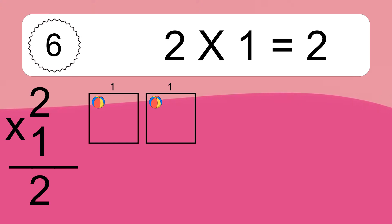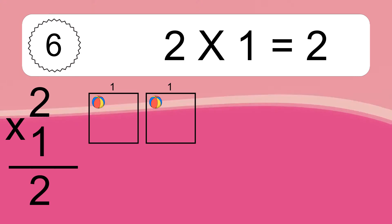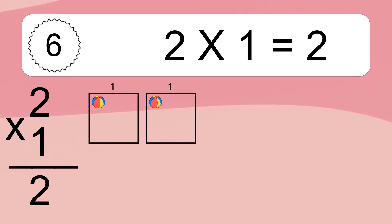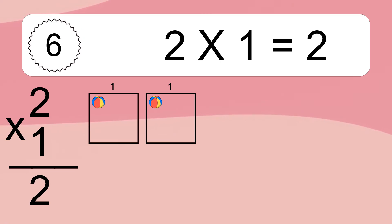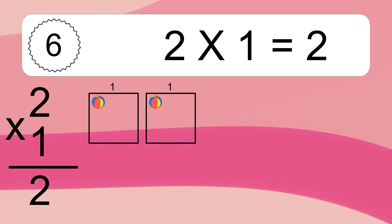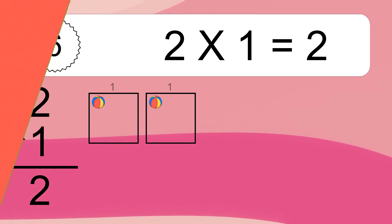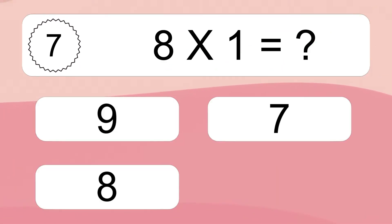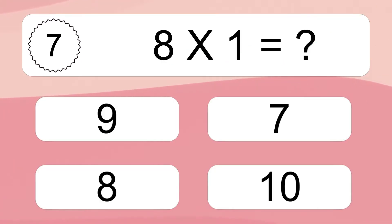2 times 1 equals what? We have 2 boxes, and each box has 1 colorful ball inside. If you count all the balls in all the boxes together, you will have 2 times 1 balls. This equals 2 balls.